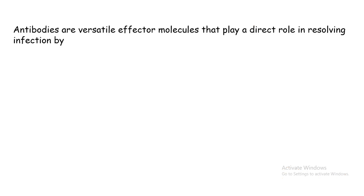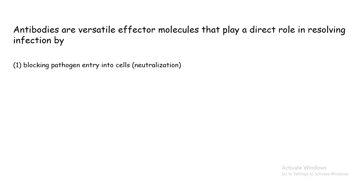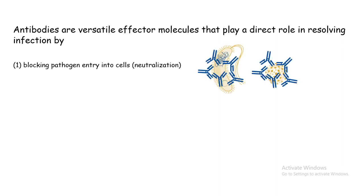Antibodies are versatile effector molecules in terms of immune response. Let's see how antibodies can be useful tools for the immune system to counter or neutralize one infection. The first mechanism by which antibodies work is by blocking the pathogen's entry into the cell — this is also termed neutralization.